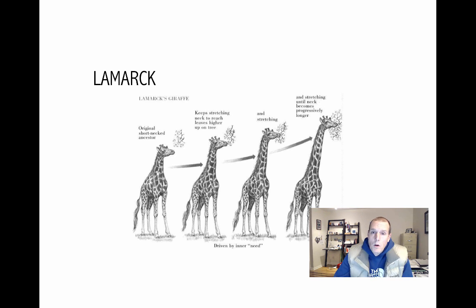But Lamarck was wrong on the count of believing that characteristics acquired during the lifespan of an organism could be passed on to the offspring. So this is much like us expecting that my children would have the same knowledge and skills that I've acquired through two degrees and a number of years working in education. And obviously, that's not going to be the case.